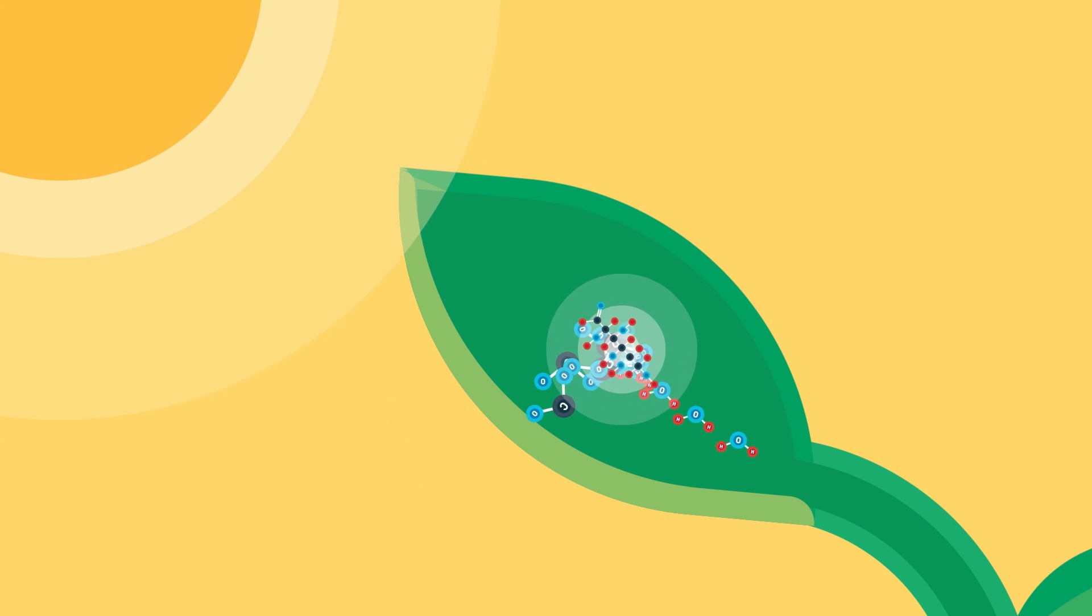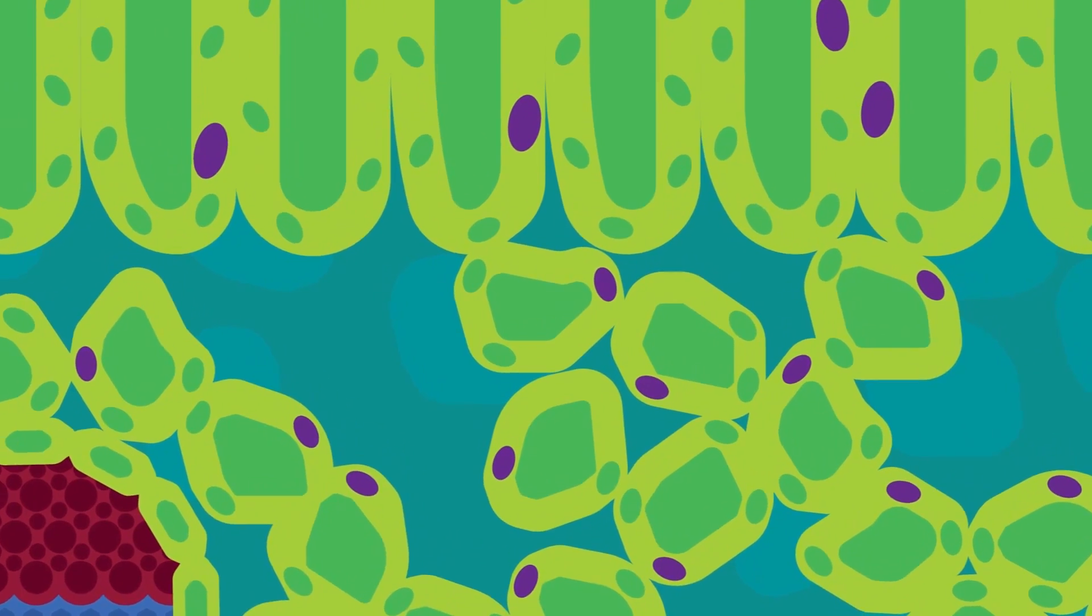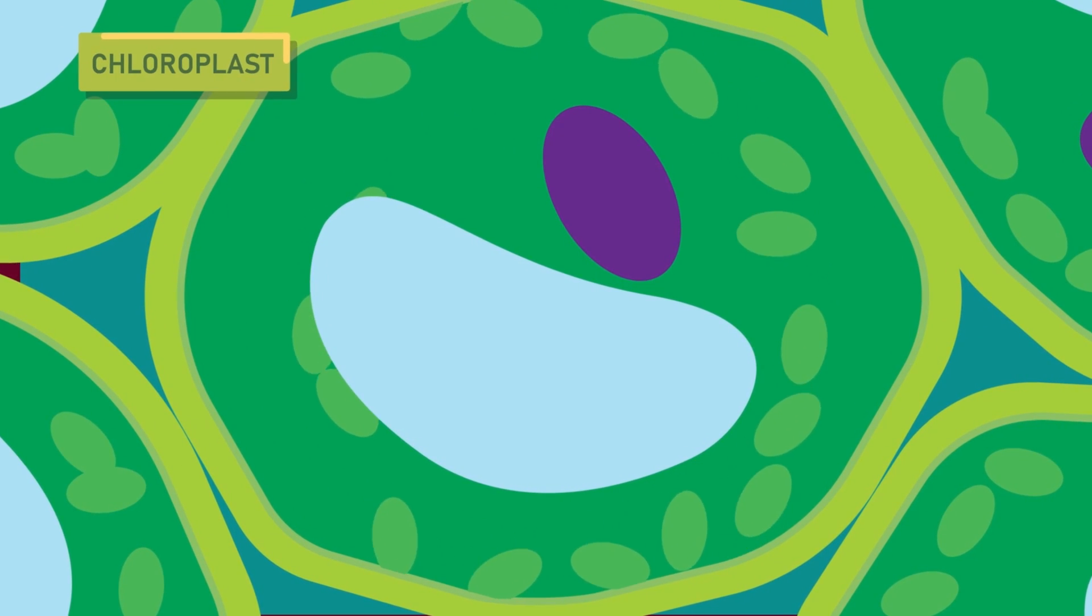This is the process of making glucose, which is the energy source for most cells. It makes this from sunlight energy, water, and carbon dioxide. Only plant cells can do this. The special organelle within the plant cells responsible for this process is called chloroplast.